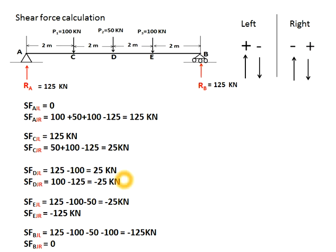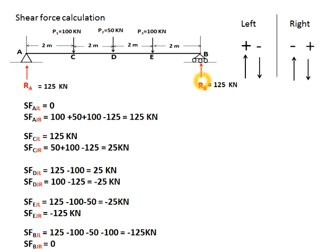At D right hand side: 100 downward is positive, minus 125 upward is negative, giving 25. At E left hand side: 125 upward positive, 100 and 50 downward negative: 125−100−50 = −25. Shear force at E just right: 125 upward. You can check point B similarly.